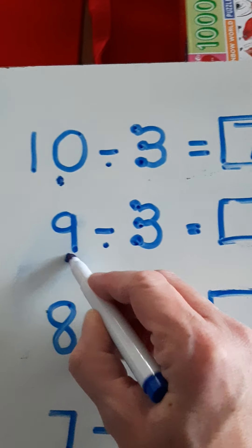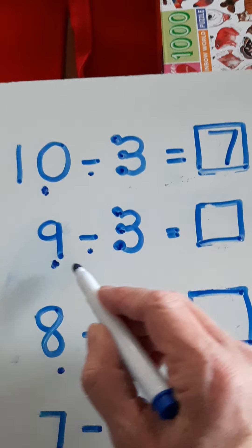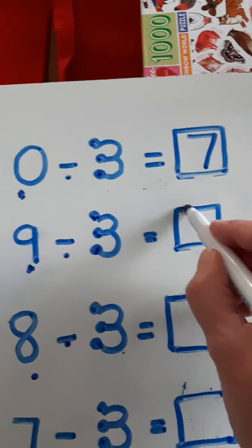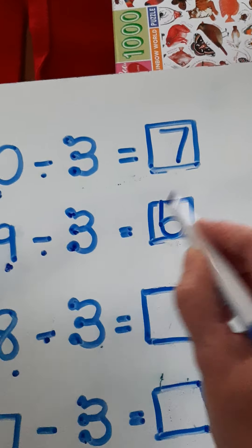So it would look like this: 10, tap my head, 10, 9, 8, 7. So 10 take away 3 equals 7.